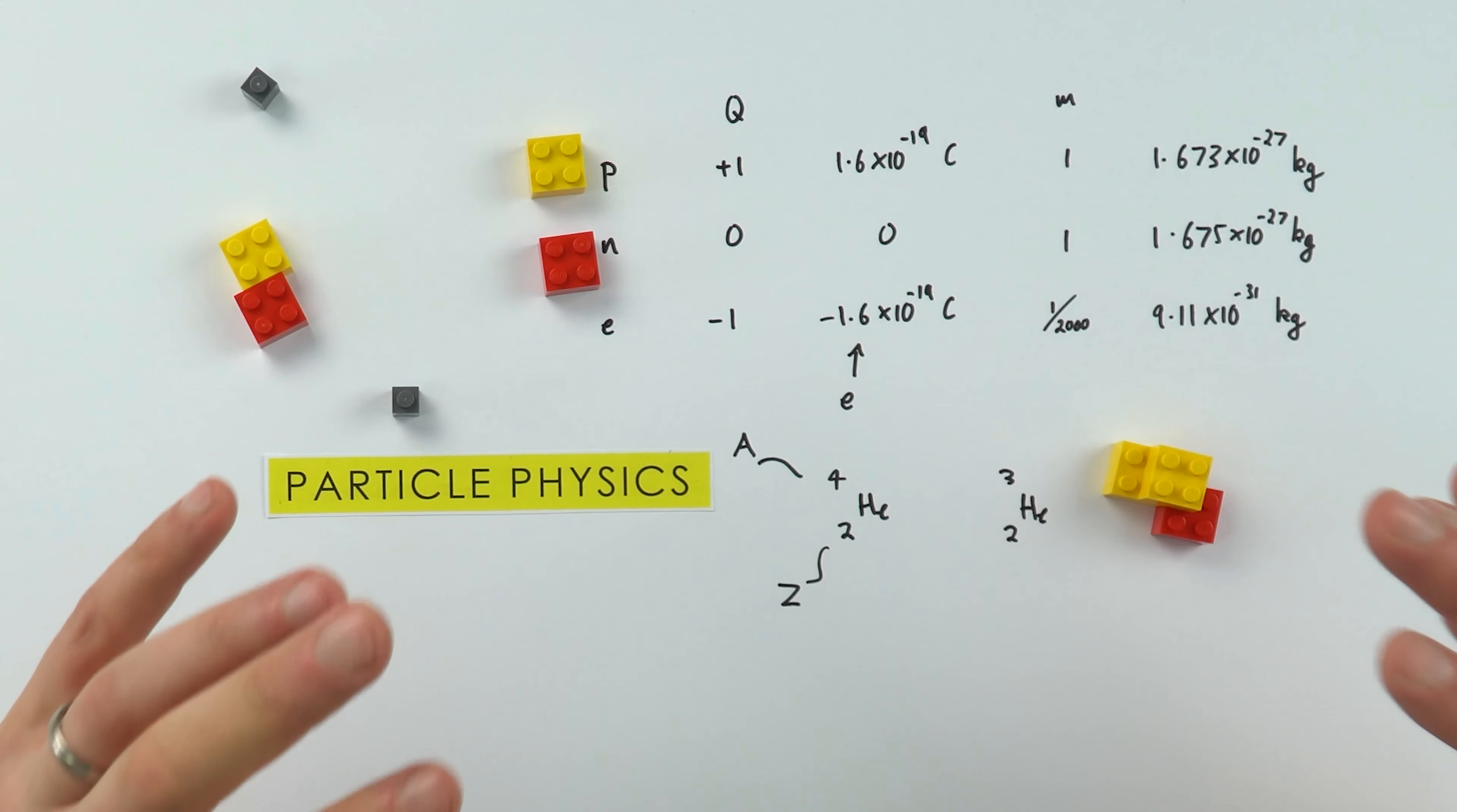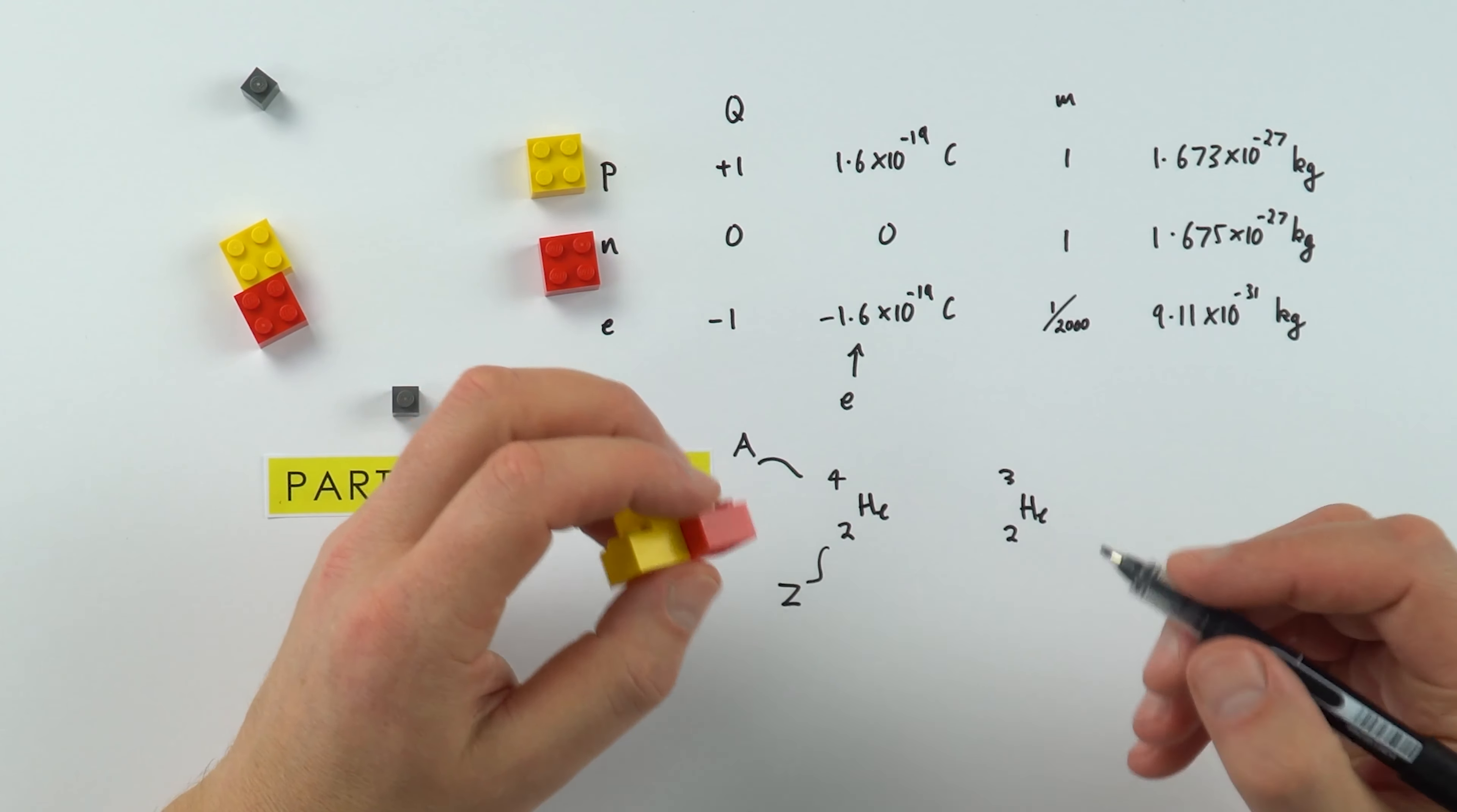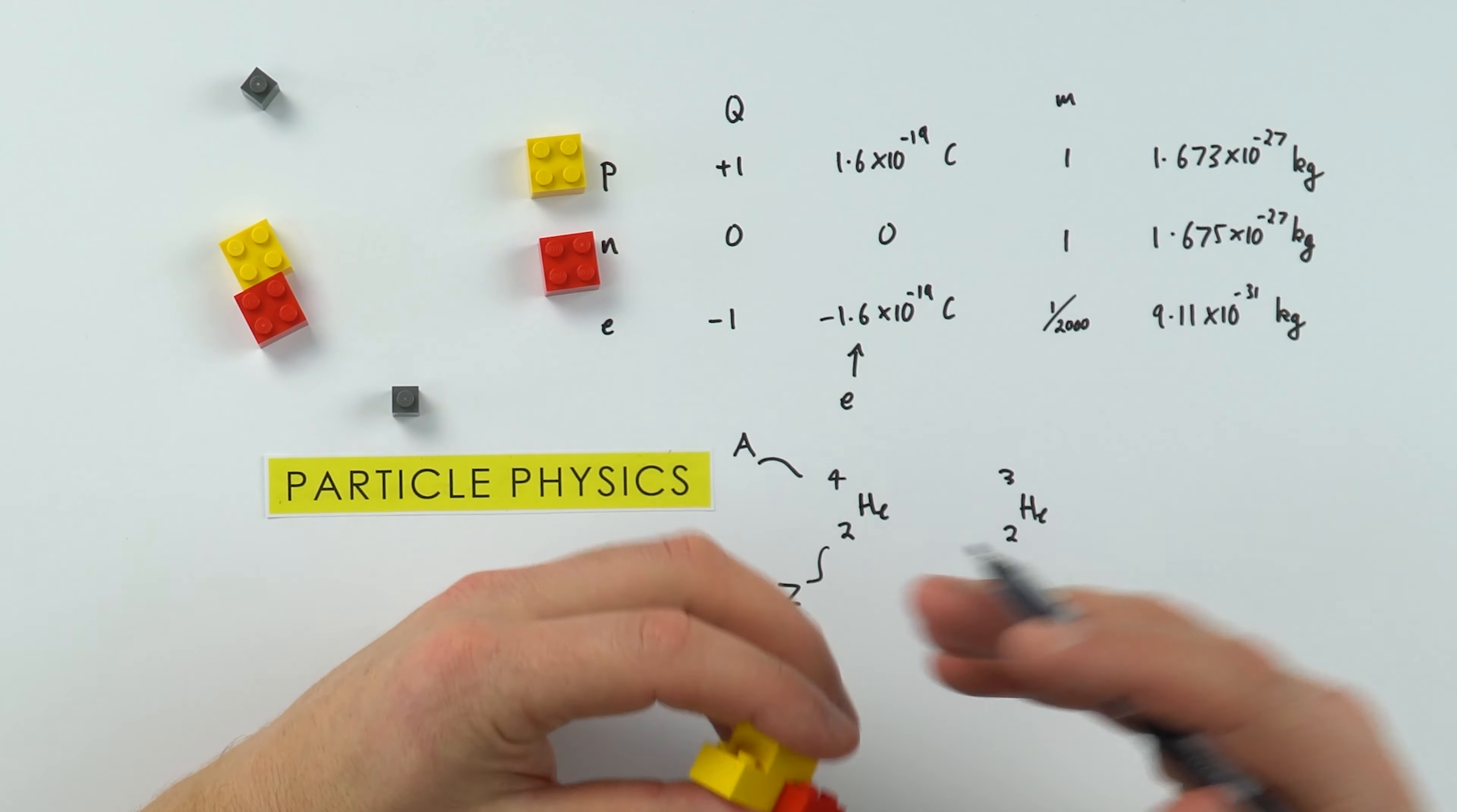That's just what you know about from GCSE. When it comes to looking at isotopes, what we spend a lot more time on, especially as we go through the A level course, is looking at the unstable isotopes, and we call these radioisotopes. And that leads on to things like radiation.